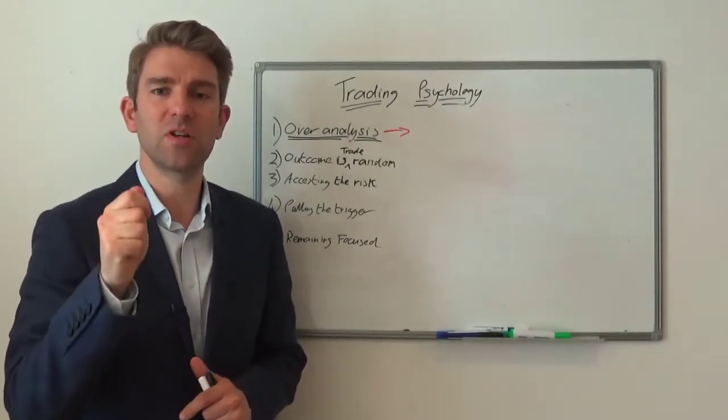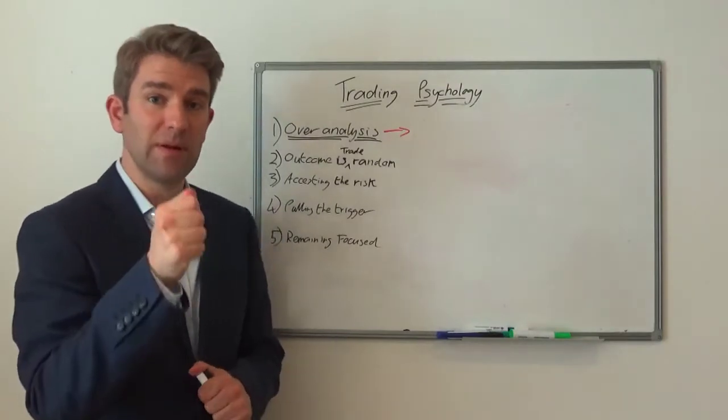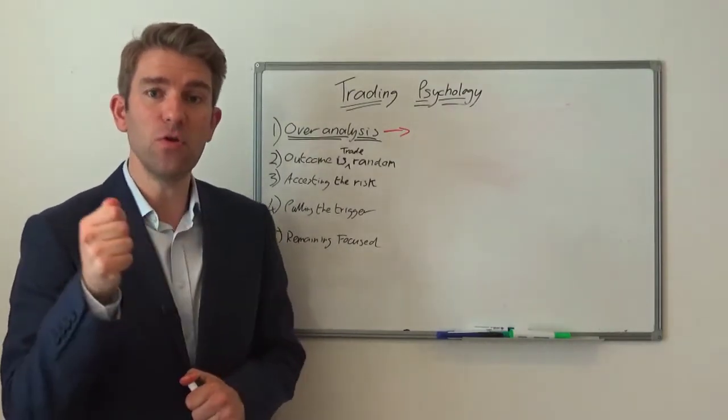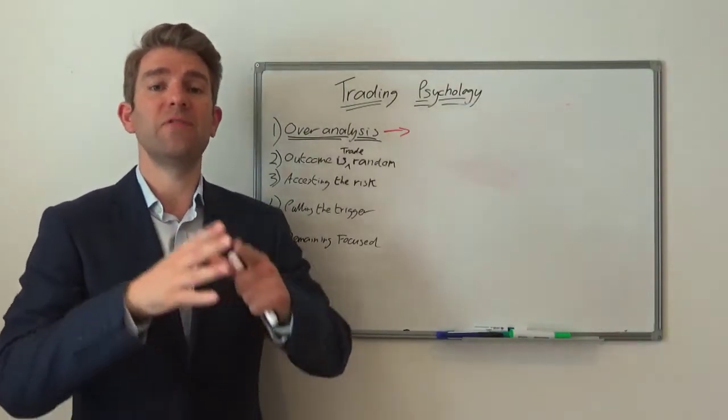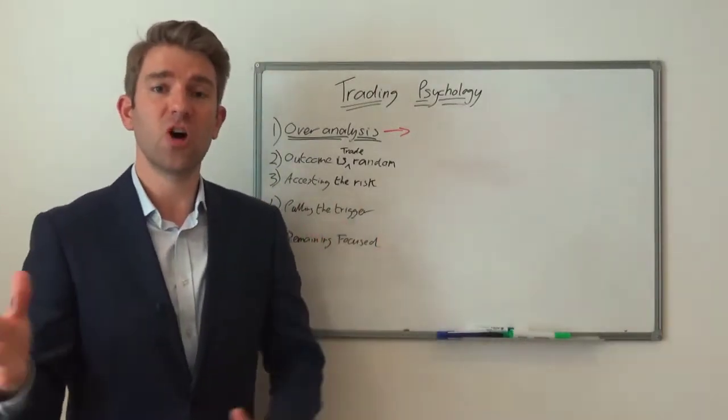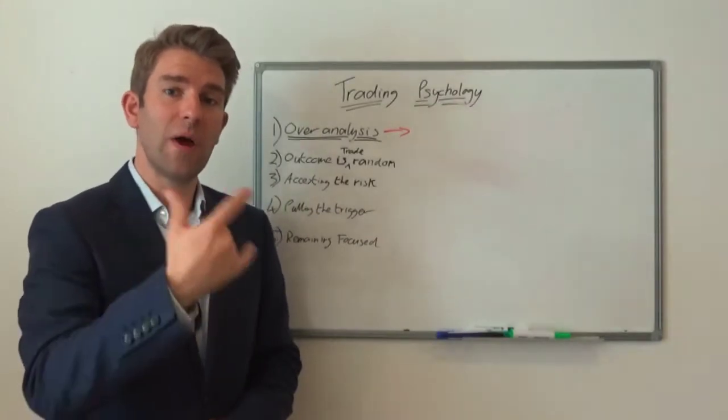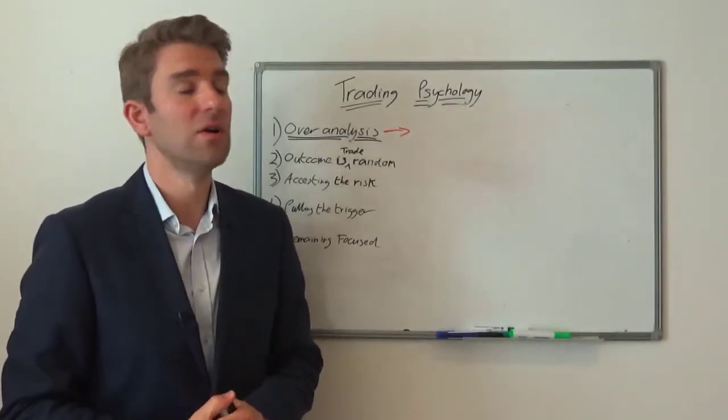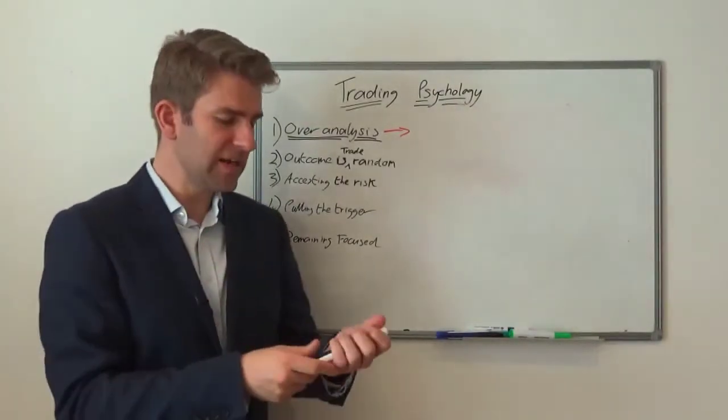It might have a high probability of working, however you don't know if it's going to work or not. If it's a 95% probability trade, whatever that may be, out of 100 times you're still going to get five losers, and you don't know when those five losers are going to occur. So let's look at this in a little bit more detail.